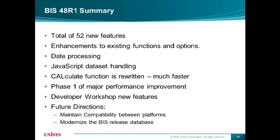In summary, there are a total of 52 new features in this release. We've made enhancements to several existing functions and options, including date processing and JavaScript dataset handling. The calculate function has been rewritten to perform much faster. With BIZ 48 R1, you'll see phase one of some major performance improvements. There's a new release of Developer Workshop with many new and useful features. In the future, look for BIZ to maintain compatibility between platforms, and we're modernizing the BIZ release database.